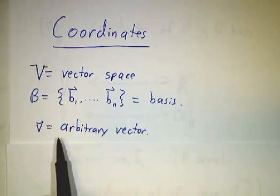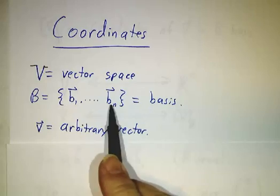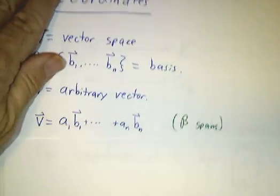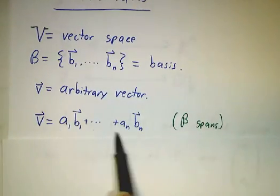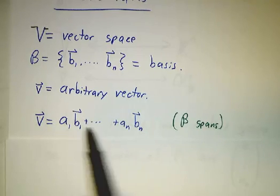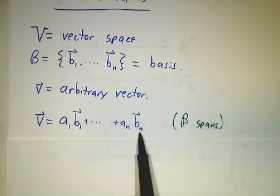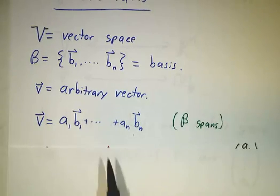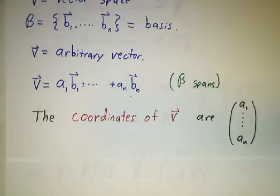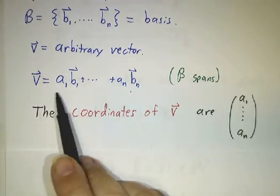If you give me any arbitrary vector, we know that this basis spans, so you can write that arbitrary vector as a linear combination. And because the vectors are linearly independent, there's only one way to write this.